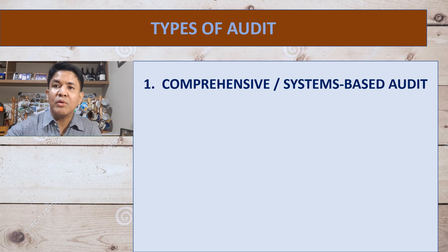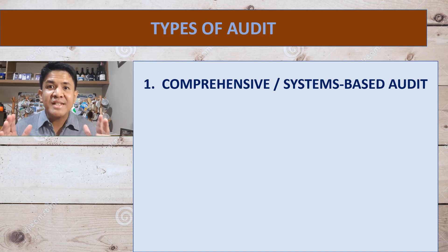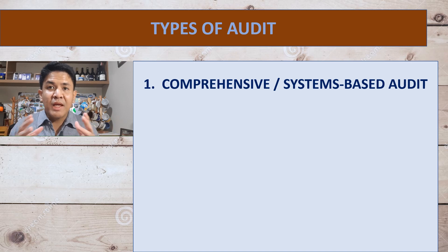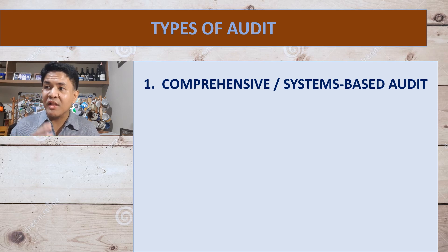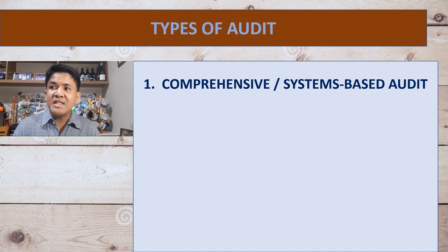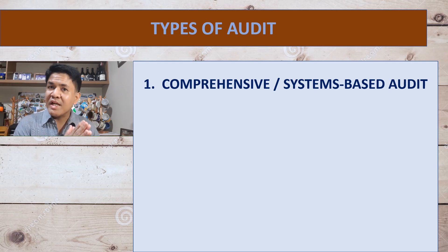When we talk about comprehensive or systems-based audit, we talk about an audit which is comprehensive in nature — one that may encompass not only the aspect of importation but also the whole of the operations of the importer. So we are not only dealing with the importation side, but we may also deal with governance, how it does its governance, partners, directors, how it does its business, what transactions it has with partners abroad or in other countries, and many other aspects. As the name implies, comprehensive or systems-based audit is based on the organization or on the system as a whole.